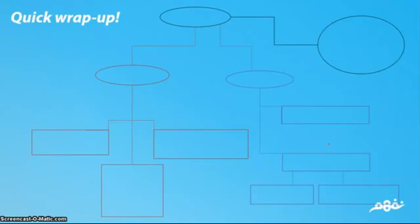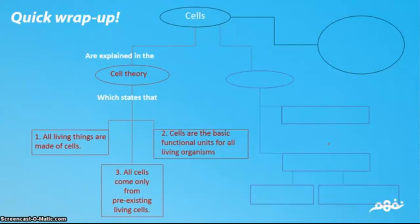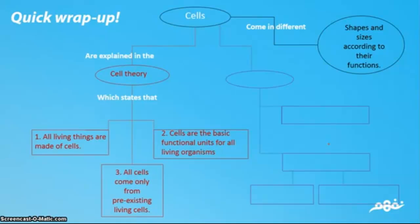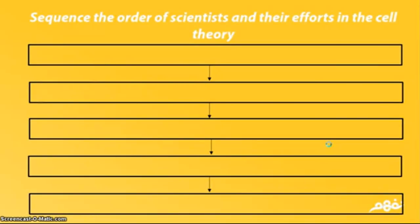Let's wrap up the lesson. We learned about cells and the cell theory, which has three points: all living things are made of cells; cells are the basic functional units of living organisms; and all cells come only from pre-existing living cells — no cell appears randomly. Cells have different jobs so they have different shapes and sizes. Cells are studied using microscopes — the light microscope and the electron microscope, which is divided into the scanning and transmission types.